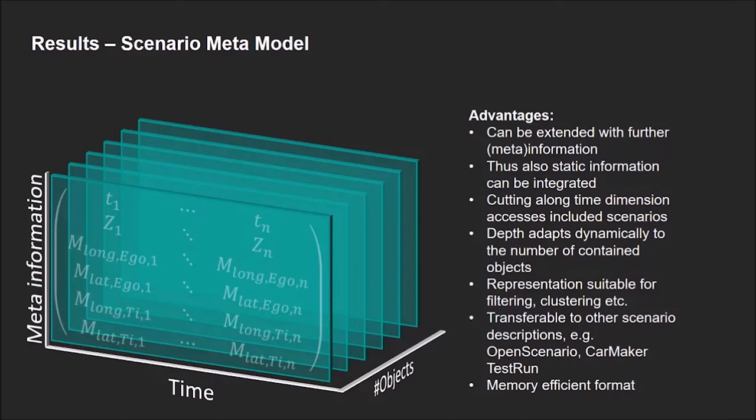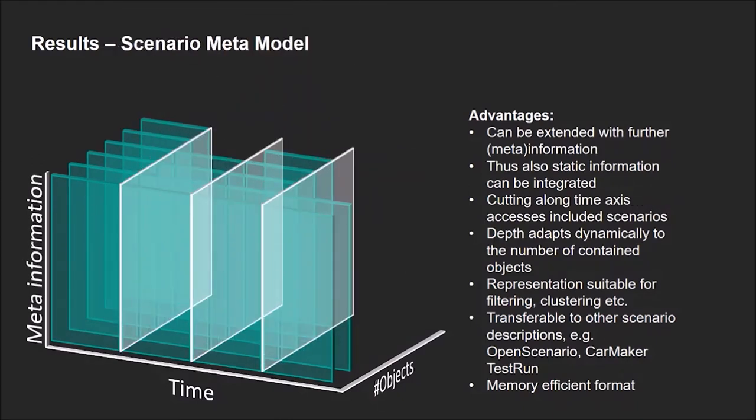To sum it up, we have a flexible scenario metamodel using this tensor approach, which can be easily extended by further information using additional dimensions. This could also be information about the scenery context of a scenario or some additional information about the static environment. A cut along the time dimension allows to access all included sub-scenarios. The depth of the tensor adapts dynamically to the number of objects in the dataset or the parts of a sub-scenario. This representation is very suitable for post-processing steps like filtering or clustering. It can be also transferred to other scenario descriptions such as OpenSCENARIO or a car maker TestRun format. And in general, it is a very memory efficient format compared to the raw data of a recording.